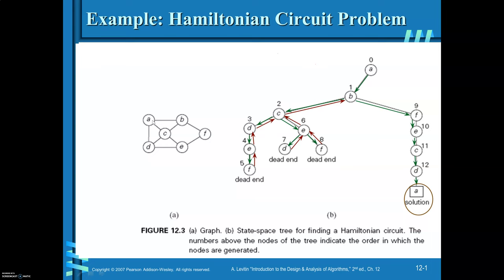Another Hamiltonian circuit is A, B, F, E, C, D, A. Like that, you can get six Hamiltonian circuits.